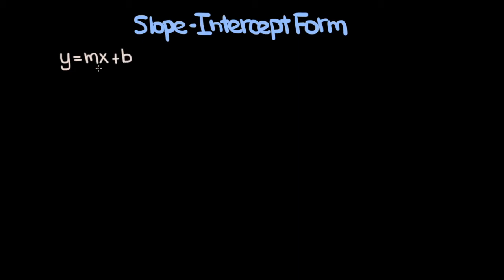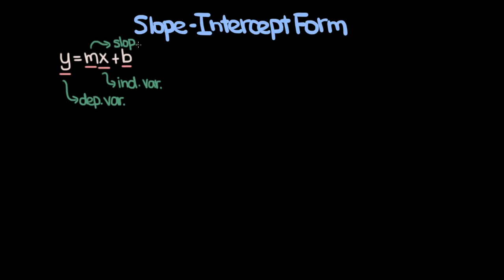In this form, x and y are our variables. x is the independent variable, while y is the dependent variable. You can think of this as a function where x is the input and y is the output, and the value of y depends on x. So x and y are the variables, and m and b are constants. Specifically, m is the slope of the line, and b is the y-intercept — hence the name slope-intercept form.